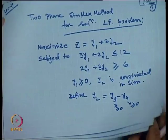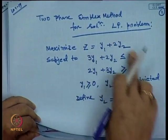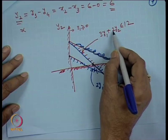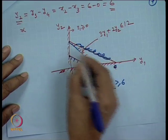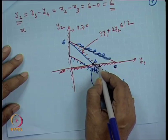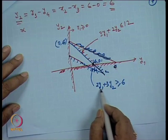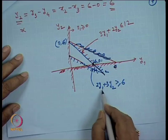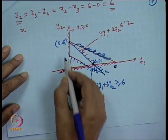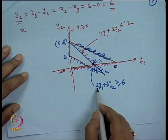Looking at the basic feasible solution graphically: for the first constraint, when y1 = 0, y2 = 6, giving the coordinate (0, 6); when y2 = 0, y1 = 4, giving coordinate (4, 0). For the second constraint, 2y1 + 3y2 ≥ 6: when y1 = 0, y2 = 2; when y2 = 0, y1 = 3, giving coordinates (3, 0) and (0, 2).